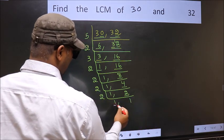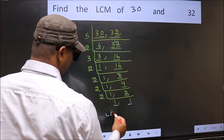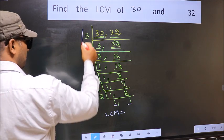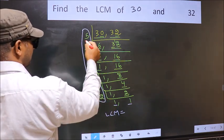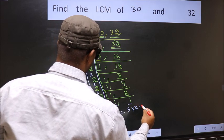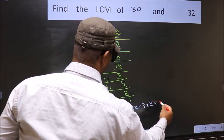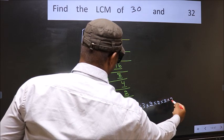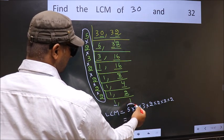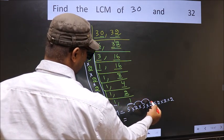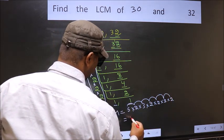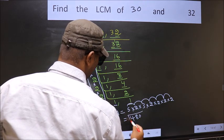We got 1 in both places. So the LCM is the product of these numbers: 5 times 2 times 3 times 2 times 2 times 2 times 2. Multiplying: 5 times 2 is 10, times 3 is 30, times 2 is 60, times 2 is 120, times 2 is 240, times 2 is 480. So 480 is our LCM.